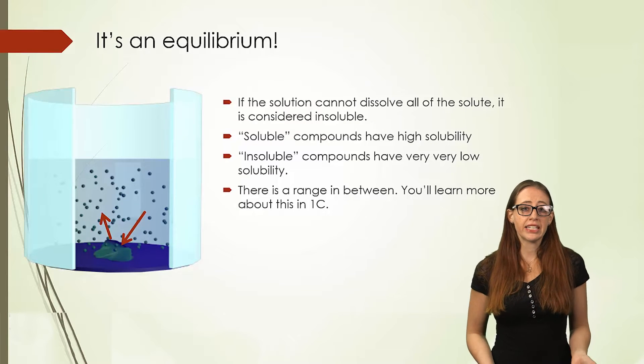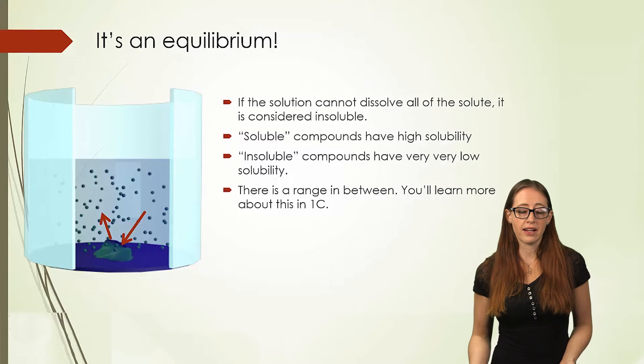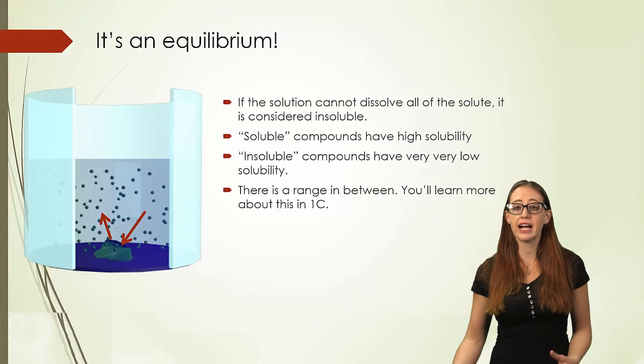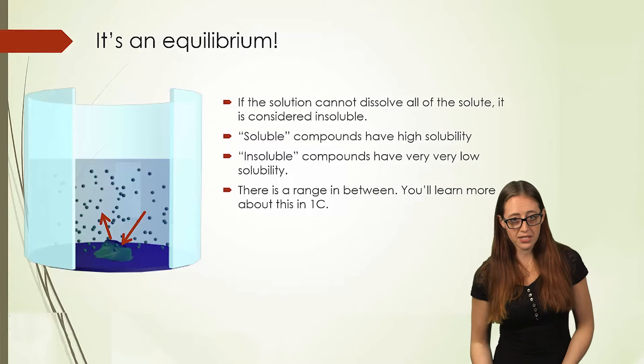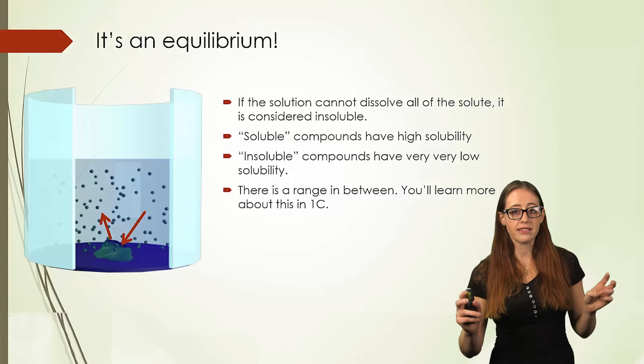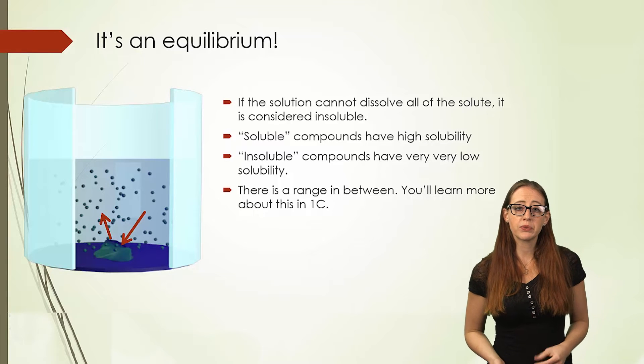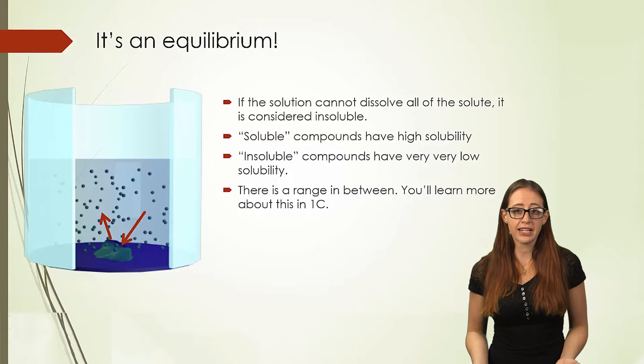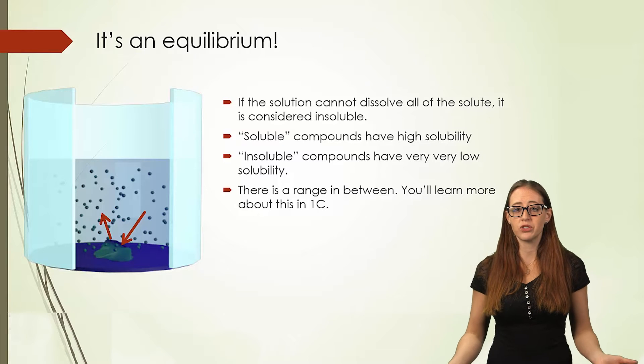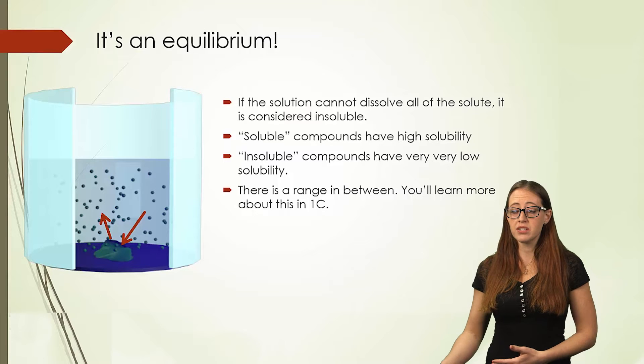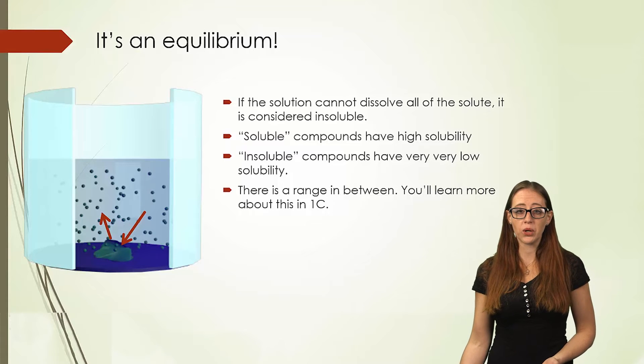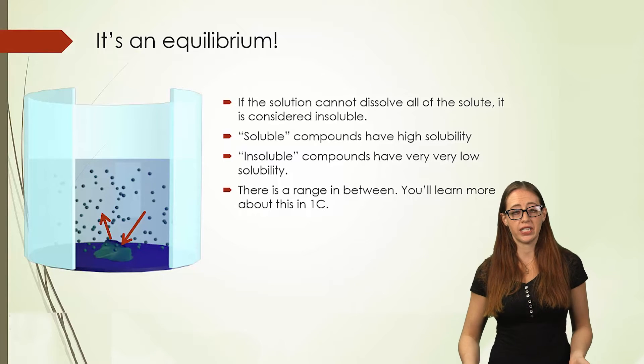Some components are easier to dissolve like this than others. Soluble compounds are those that have a very high solubility. Compounds that have a very low solubility are generally called insoluble. There is a really large range of solubility. Dividing them into the two classes is a dramatic oversimplification. In either case, once you dissolve the most possible that the solution can hold, we have a saturated solution.